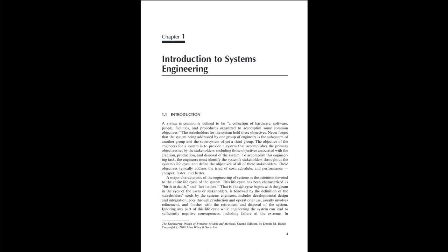This life cycle has been characterized as birth to death and dust to dust. The life cycle begins with the gleam in the eyes of the users or stakeholders, is followed by the definition of the stakeholders' needs by the systems engineers, including production and operational use, usually involves refinement, and finishes with the retirement and disposal of the system. Ignoring any part of this life cycle while engineering the system can lead to sufficiently negative consequences, including failure at the extreme.